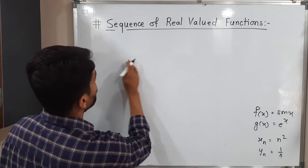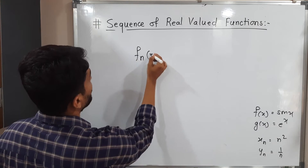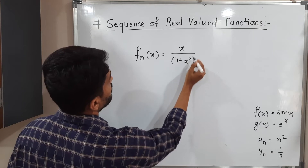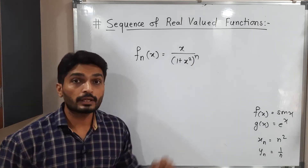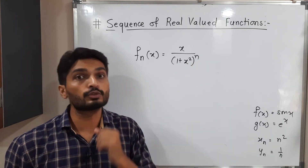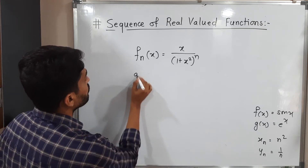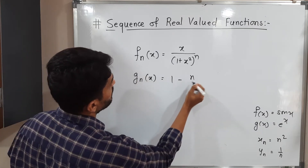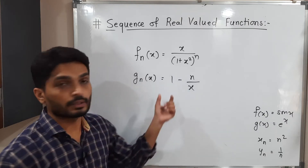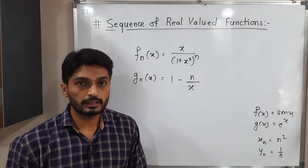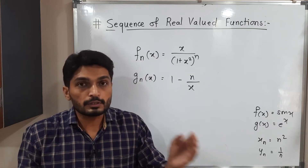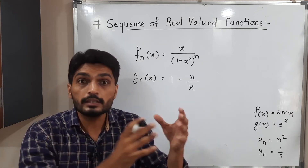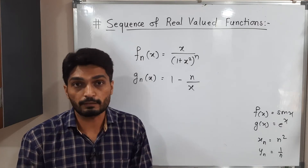So a sequence of functions will look like this: fn(x) = x upon (1 + x squared) raised to n. You can see that x is there and n is also there. Another example: gn(x) = 1 minus n upon x. Again, n is there and x is there. So we have several functions forming a sequence — that's why we call it a sequence of functions.